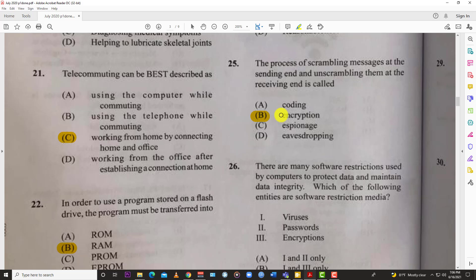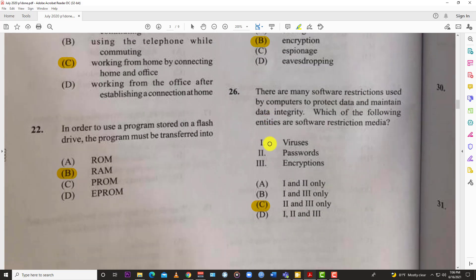Number twenty-six: there are many software restrictions used by computers to protect data and maintain data integrity. Which of the following entities are software restriction media? We have 1) viruses, 2) passwords, and 3) encryption. The best answer is two and three - passwords and encryptions. Viruses can be used to penetrate people's systems, so that's not really the answer. The best answer is passwords and encryption to protect data.